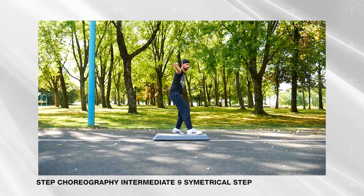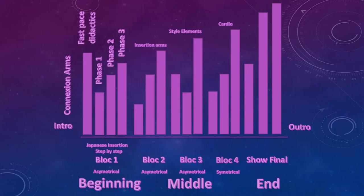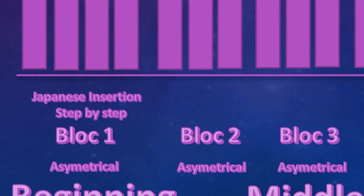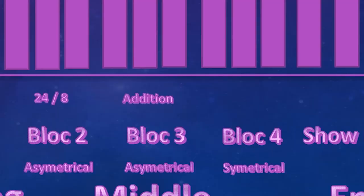In the fourth part I use the cardio — it's a symmetrical choreography but really high cardio and an easy technical level. In my first block I always use the Japanese insertion and the step-by-step method. In my second block I use the 24-to-8-count method. The third block uses addition because we're doing many style elements, and the fourth block uses the liaison method between the cardios left and right — really easy, just put them together.